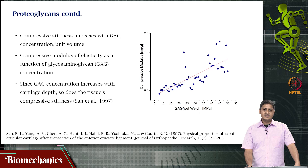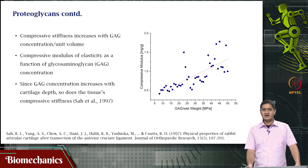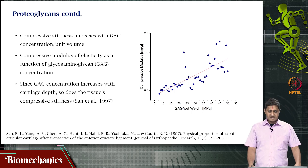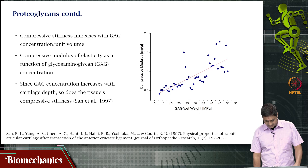Compressive stiffness increases with the amount of GAG concentration per unit volume. If we plot the modulus of elasticity as a function of GAG concentration, we see that as GAG increases, the modulus keeps increasing. In general, GAG concentration increases with the depth of cartilage, so tissue compressive stiffness increases with GAG concentration and how deep into the cartilage it is present.